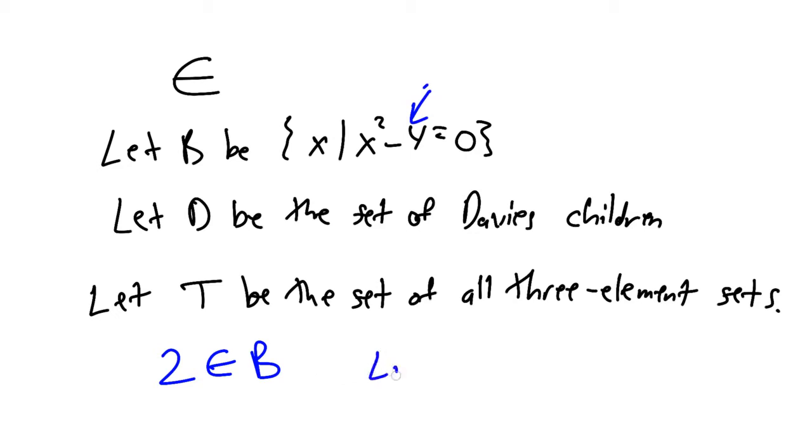I could say Lizzie ∈ D, because Lizzie is in fact one of the Davies children. Another thing I could say is Fred ∉ D. Notice that I'm using a slash through here to indicate that it's not an element of. That's legit notation.